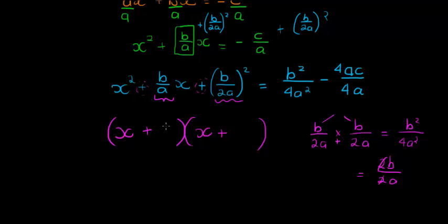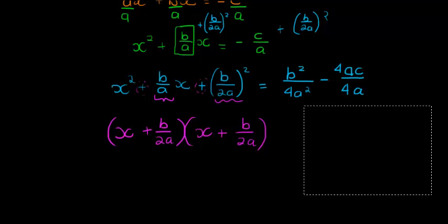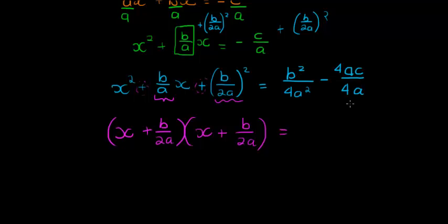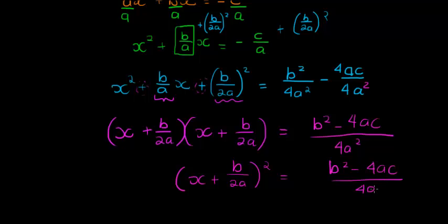So the two numbers I want to multiply together to get b over 2a squared are b over 2a and b over 2a. On the right-hand side, I have b squared minus 4ac, all over 4a squared. So I've got: x plus b over 2a, squared, is equal to b squared minus 4ac over 4a squared.